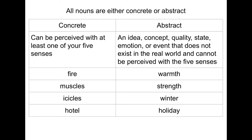All nouns are either concrete or abstract. Concrete nouns can be perceived with at least one of your five senses, whereas abstract nouns are ideas or concepts, qualities, states, emotions, or events. They don't exist in the real world and cannot be perceived with the five senses.